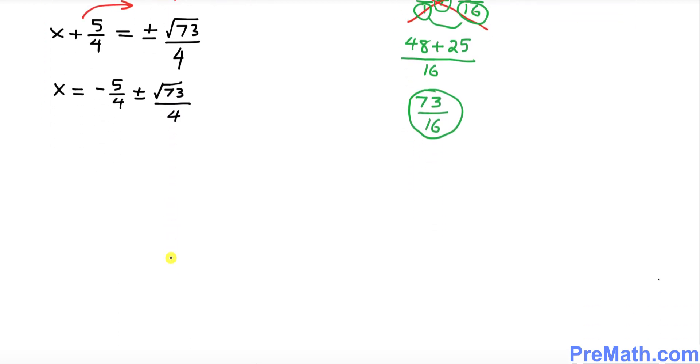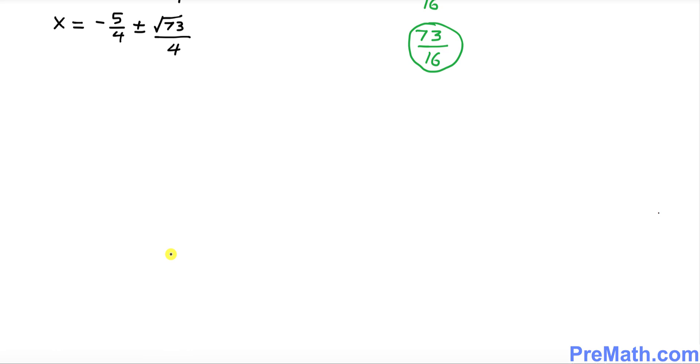So far so good. The next step is we want to split them up along these positive and negative signs. One solution is x = -5/4 + √73/4, and the other one is x = -5/4 - √73/4.